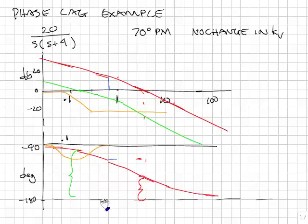In order to move the crossover to that point, I need to reduce the gain of the system in this vicinity by about 14 dB.